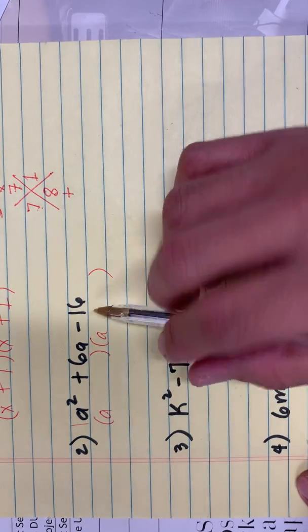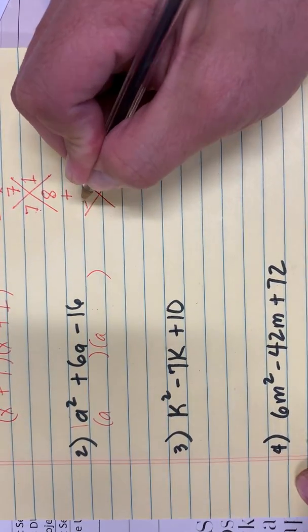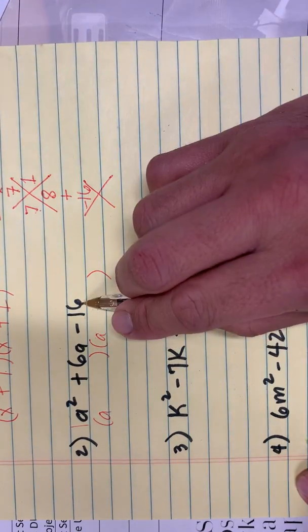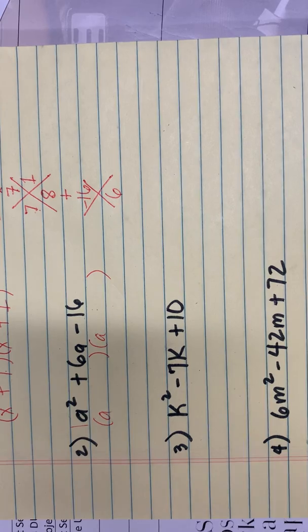Number 2: A squared plus 6A minus 16. So think of two numbers when you multiply them gives you negative 16, the C. When you add them, gives you a 6.